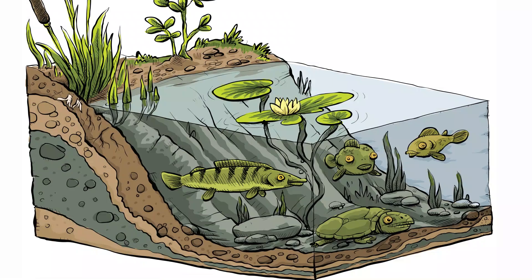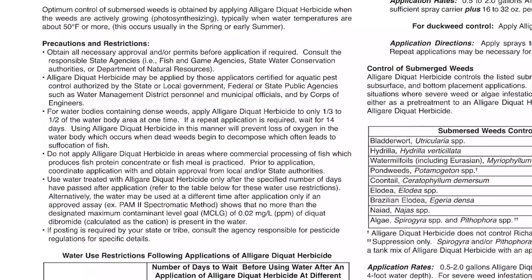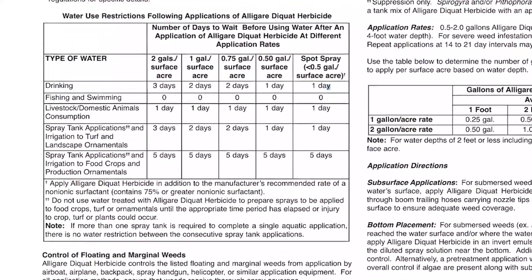Once you have identified the weeds, there are some things you need to consider before you begin treatment. First, you need to know the size of the pond — measure the pond's surface area and the depth. Knowing the size will help you when figuring out mix rates. You will also need to consider if your pond is used for drinking, recreation, irrigation, or houses fish. Always read the label of any aquatic herbicide because some herbicides have water use restrictions. For instance, you might have to wait several days before you can drink treated water depending on your application rate.